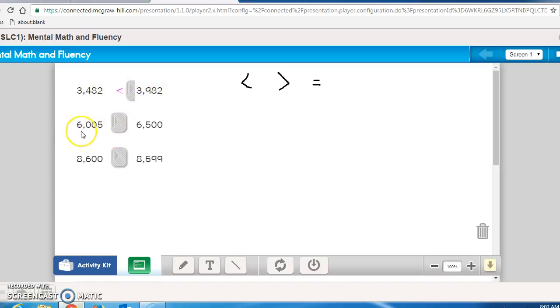Our next one, again, you start out looking at the thousands place, they are the same number. Look at our hundreds place, zero and five. So once again, zero is smaller, so that's another less than sign.